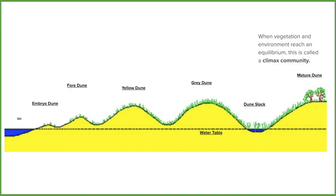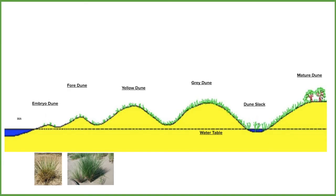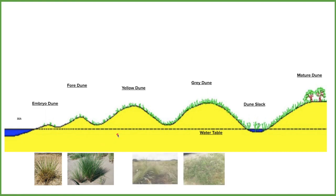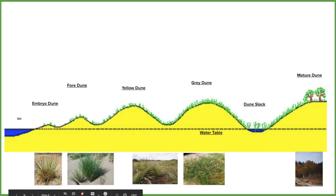Let's have a look at some examples. In the embryo dune and foredune we're going to see this spiky grass — the pioneers, the sand rocket. In the picture, it's mostly sand with some sporadic, small amounts of grass — this is where sand gets trapped. As we move into the yellow and grey dunes, we've still got the grasses but covering the majority of the area — you can still see some sand in places but it's starting to sprawl out. And at the mature dune, it's covered in grass with some trees — the deciduous trees we'd expect to find in a climax community for the UK.